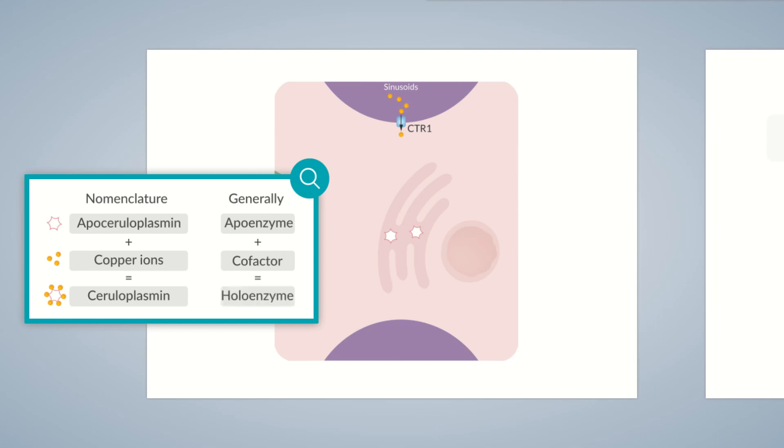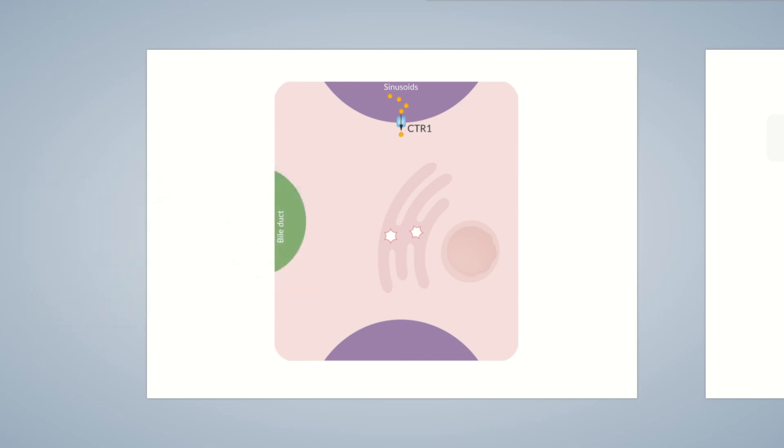The complete enzyme is called a holoenzyme. In our example, the holoenzyme is ceruloplasmin. Now, let's get back to copper transport.